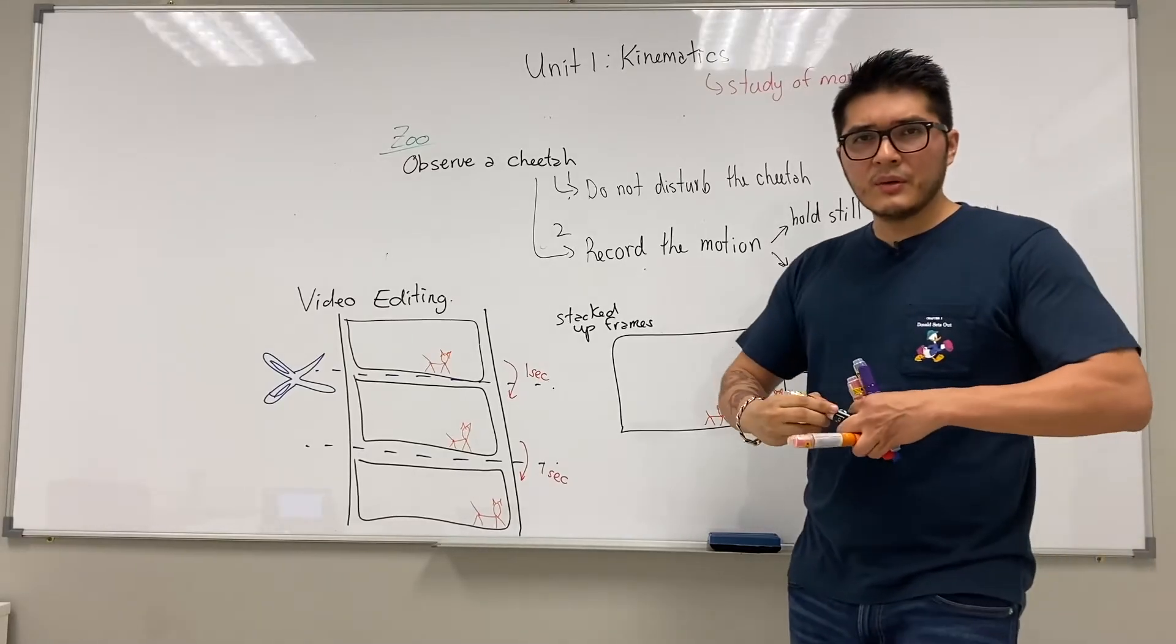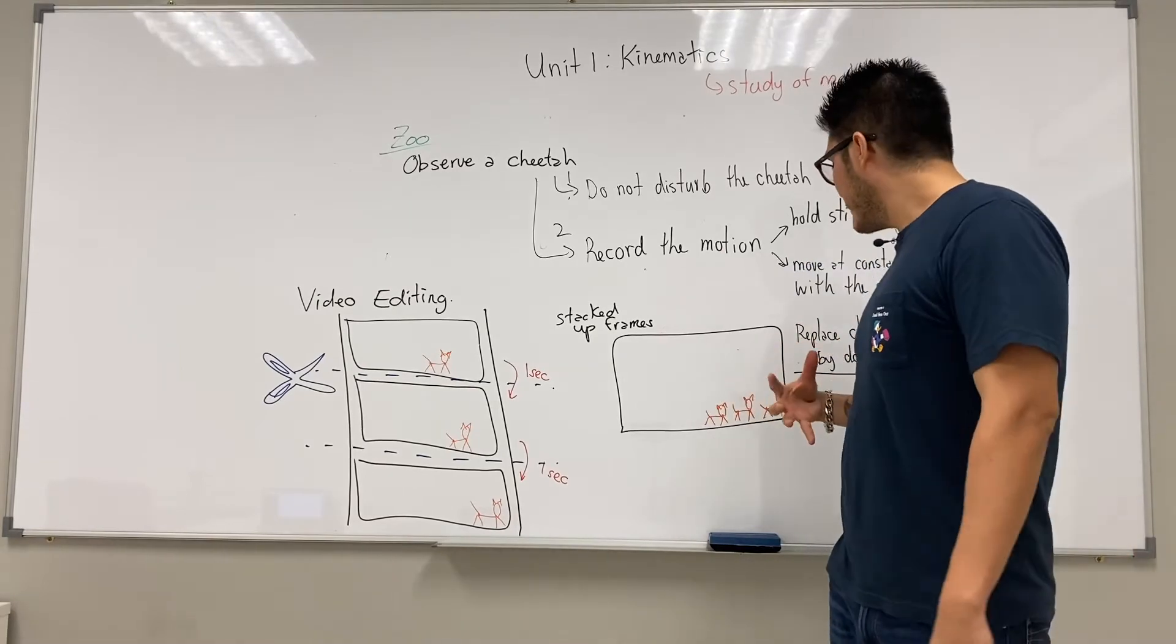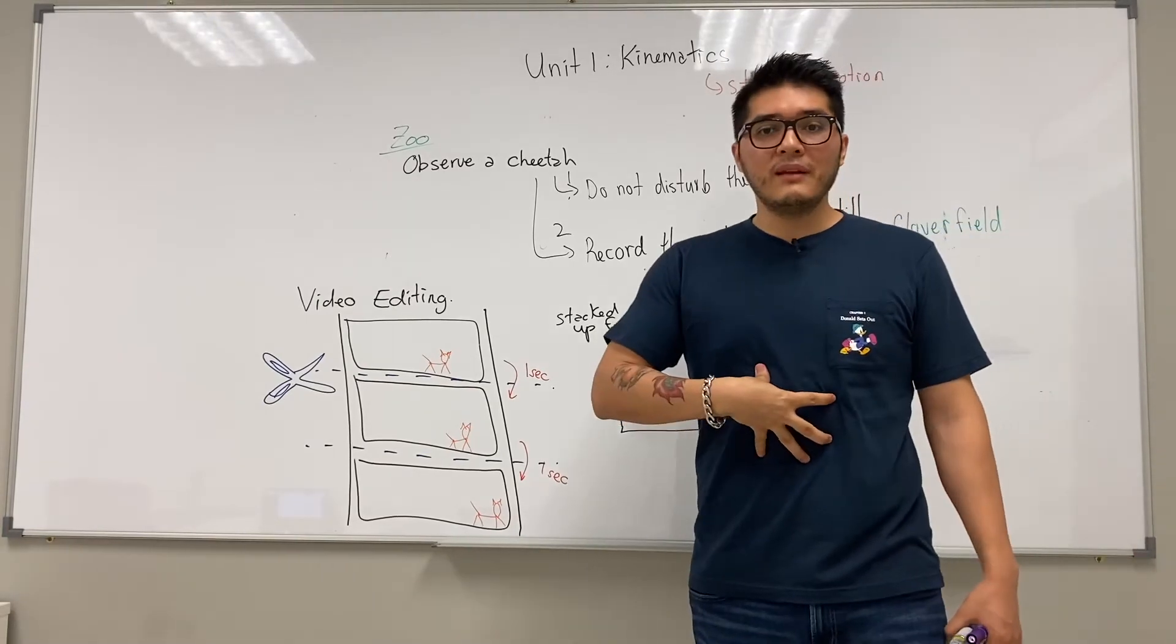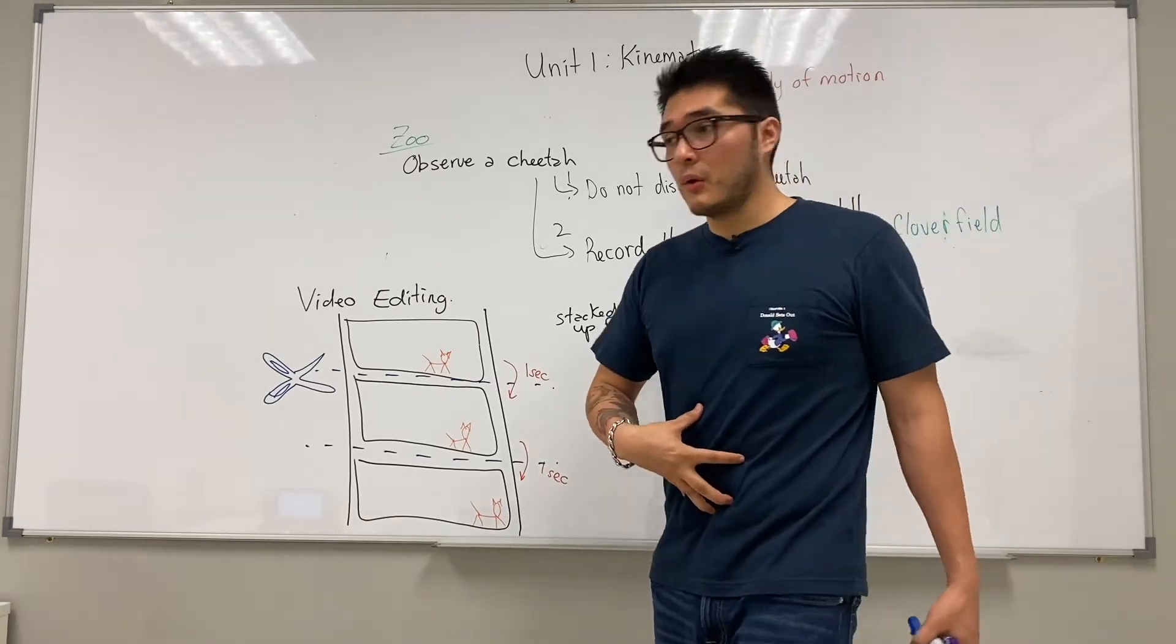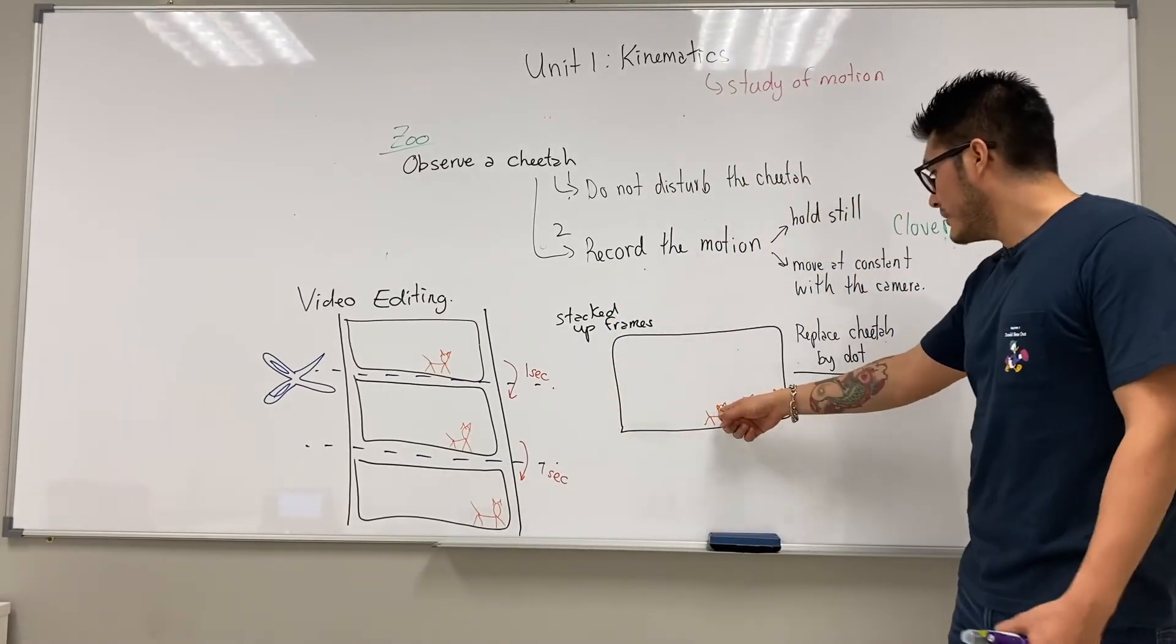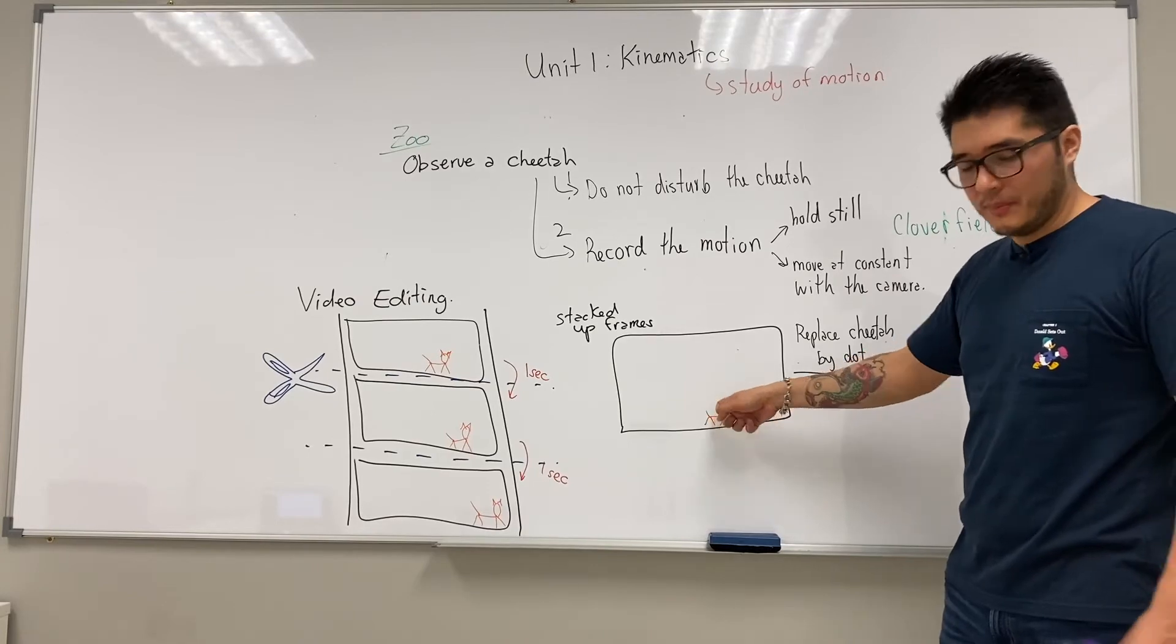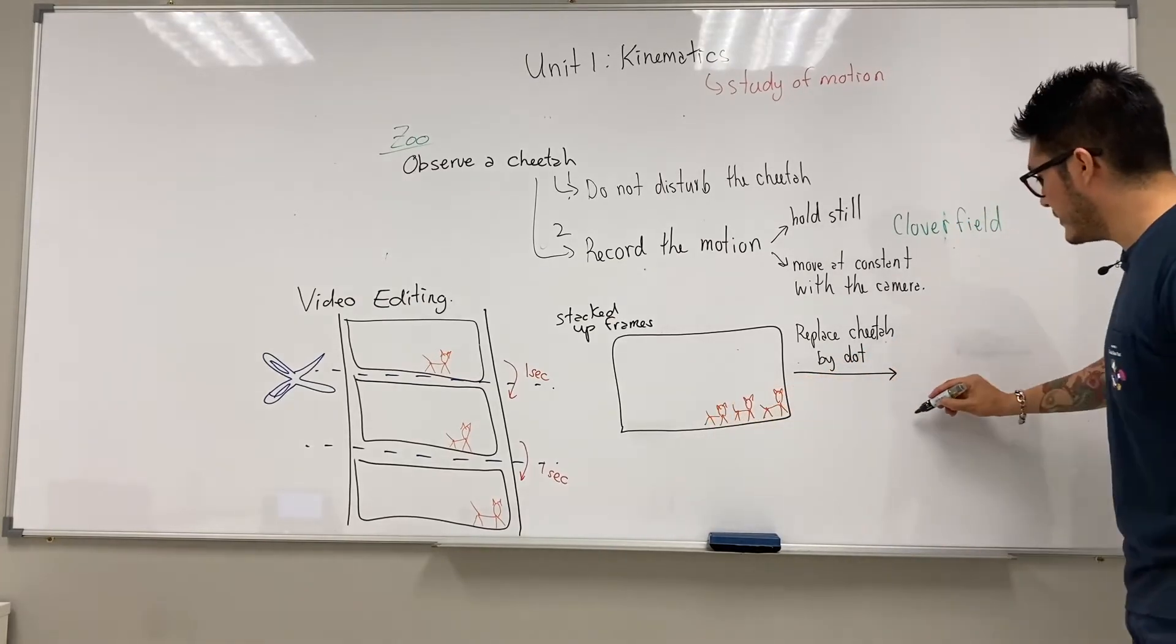Now this dot, you want to draw normally where the center of mass is, or in other words, where most of the weight or the mass of the object is located. So for example, for me it would be right at the core. For the cheetah, maybe somewhere in the middle of its body. So let's try to redraw this image here.